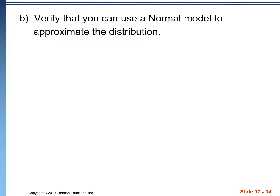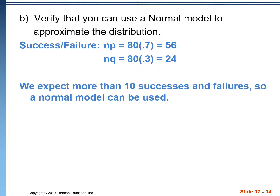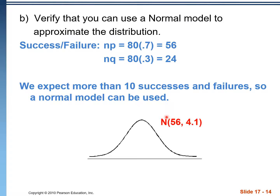To verify we can use a normal model, we check the success-failure condition. NP = 56 and NQ = 24, both greater than 10. We write: we expect more than 10 successes and failures, so a normal model can be used. Our normal model is centered at a mean of 56 with a standard deviation of 4.1.